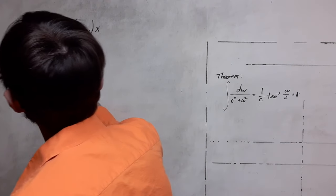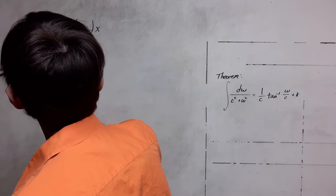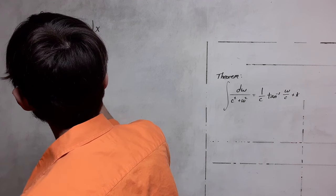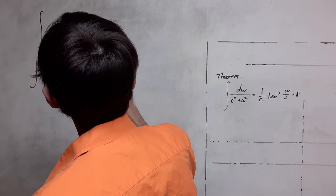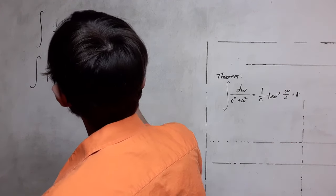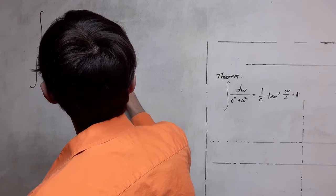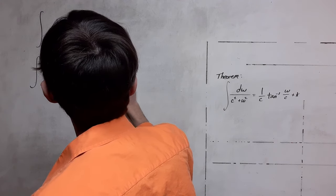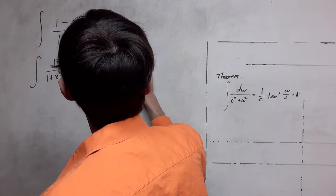So we're going to have 1 over 1 plus x squared dx minus, and then this here, x over 1 plus x squared dx.